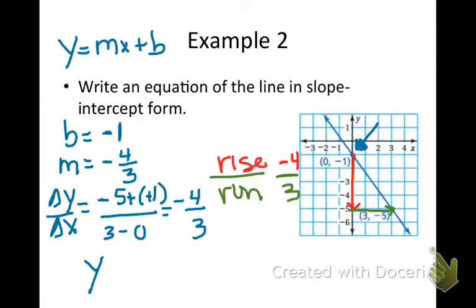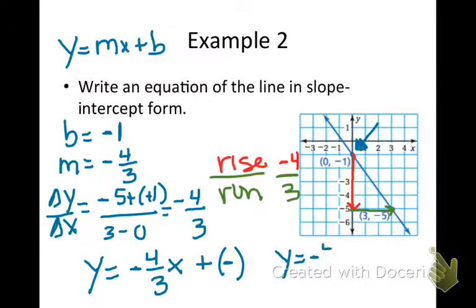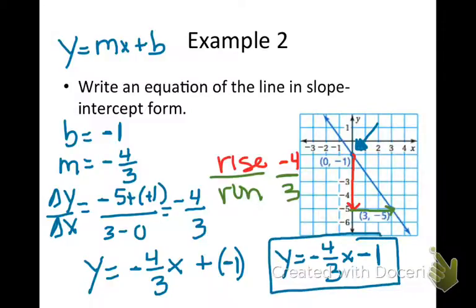To put that in slope-intercept form, I use what I just calculated for my slope in place of m, and put my x coordinate plus negative 1. So simplified: y equals negative 4/3 x minus 1 in slope-intercept form is the simplest way to write it. I will accept the plus negative form at this point, but try to get used to this simplified form.